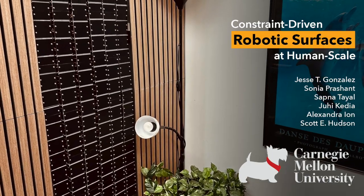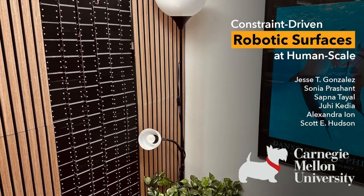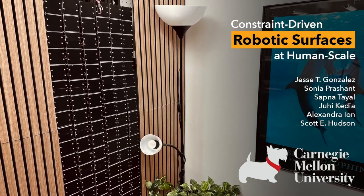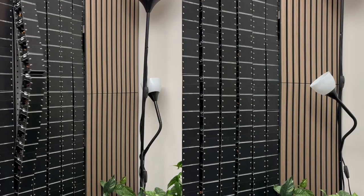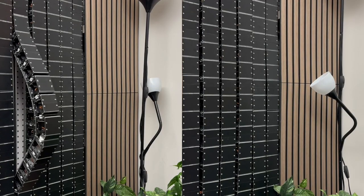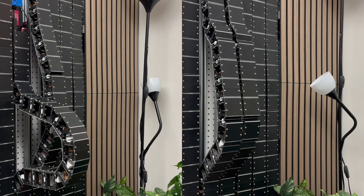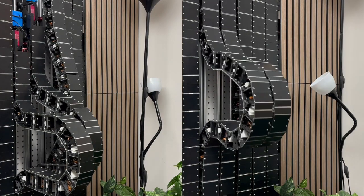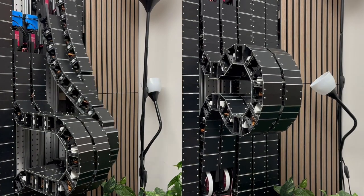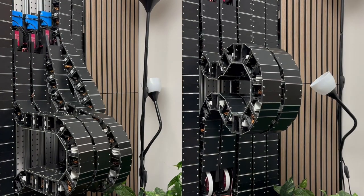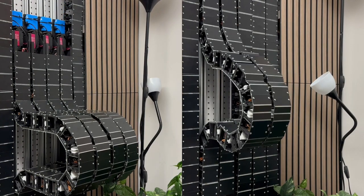Any architect will tell you that the design and the shape of a wall has a big impact on how we experience the space around us. A dynamic wall, like what you see here, creates even more possibilities for rich interactions. This is a robotic surface, which can be configured to form a number of different shapes through the use of lightweight, programmable constraints.